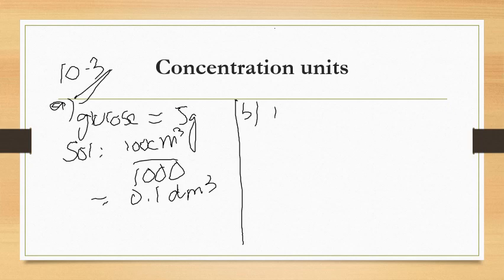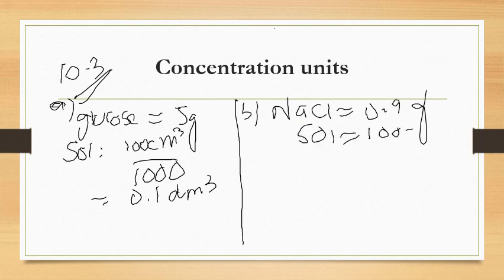The saline solution contains NaCl. The NaCl amount is 0.9 grams, and the volume of this solution is again 100 centimeter cubes. You have to convert it into decimeter cubes, so it becomes 0.1 decimeter cubes.